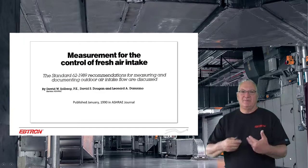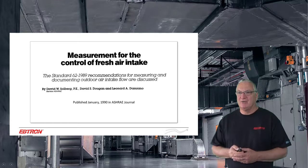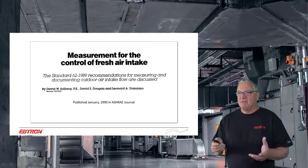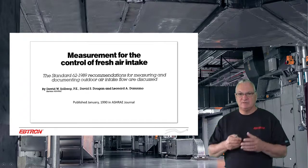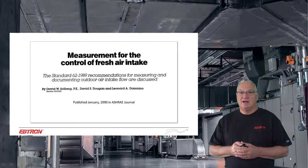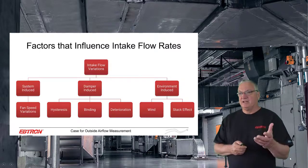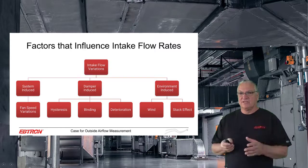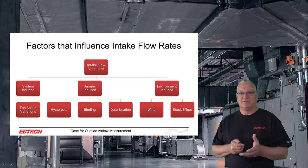We're going to go back to a paper we published 30 years ago — it's still a very important paper — on measurement for the control of fresh air intake. It discusses some of the problems we have to overcome when we decide to be concerned with dilution ventilation, and a lot of the problems we have today really come to light in this analysis. We'll go into detail about what we need: system-induced, damper-induced, and environmental-induced factors that influence outdoor air flow rates.